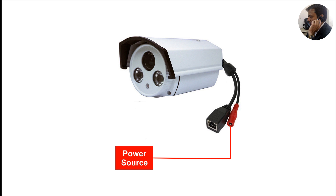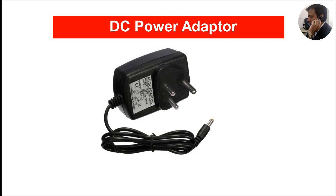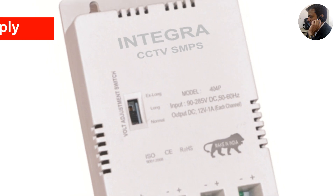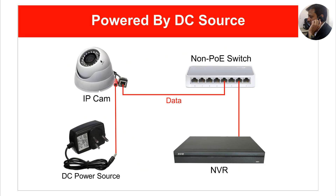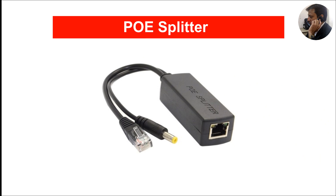Most of the cameras are designed to be powered by 12V DC power. So we can use a DC source like a DC adapter to power up a single camera, or we can use a multiple output power supply if the number of cameras is more than one. The downside of this method is that we have to run an additional cable from the DC power source up to each camera, which may give you a headache especially if you have to install a large number of cameras.